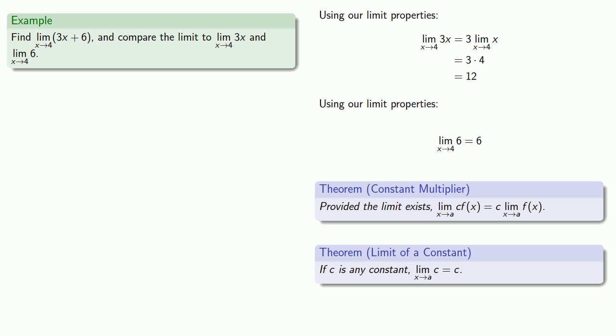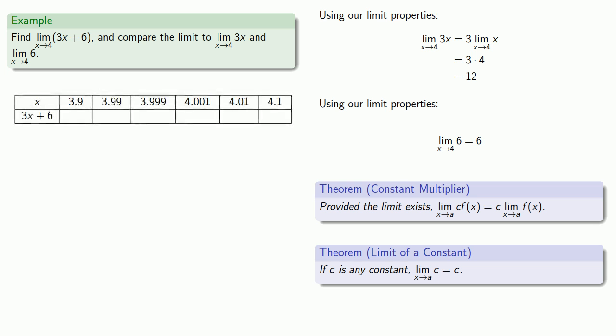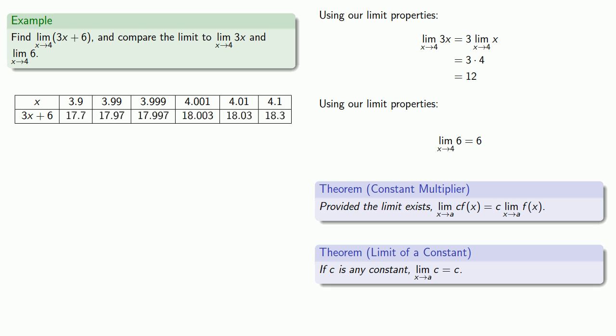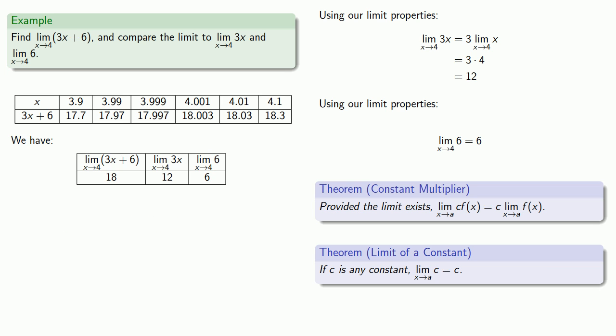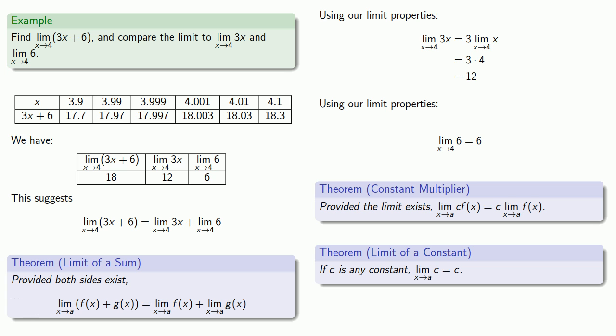As for the limit as x approaches 4 of 3x plus 6, we don't have any rule yet for the limit of a sum, so we'll find that limit numerically. We'll pick some x values close to 4 and evaluate 3x plus 6 at those values. It appears we're getting a limit of around 18. Putting our information together, it appears that the limit as x approaches 4 of the sum is the sum of the individual limits. This gives us a new limit rule: the limit of a sum is the sum of the limits.